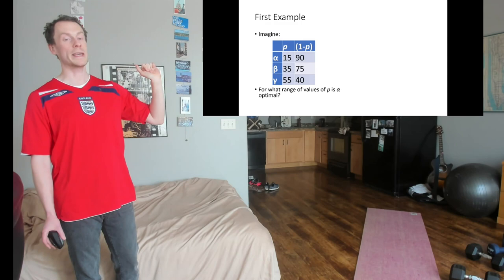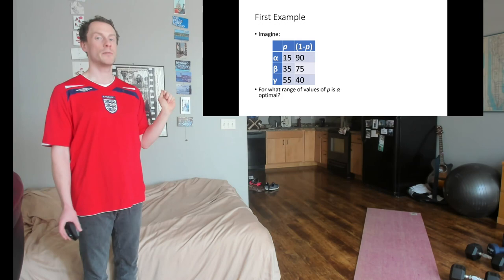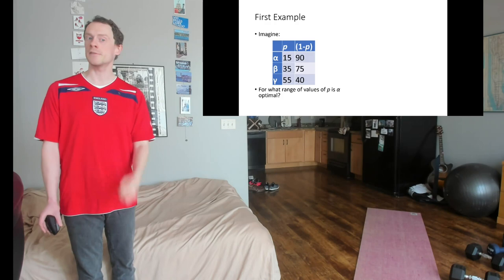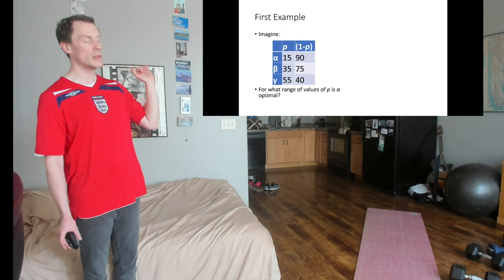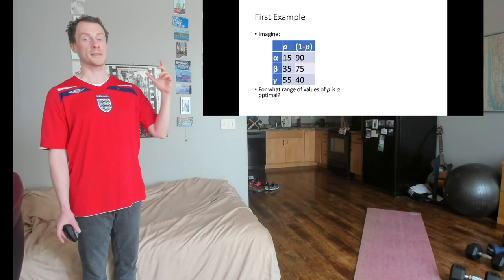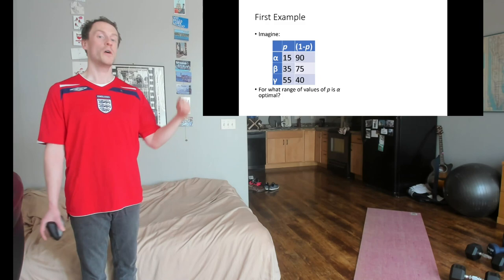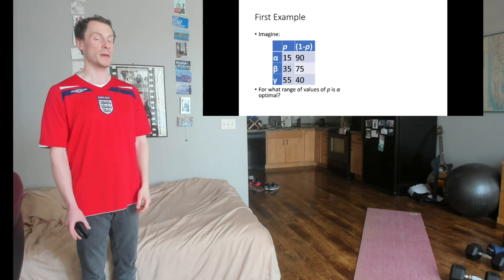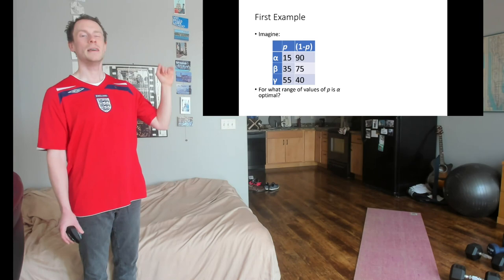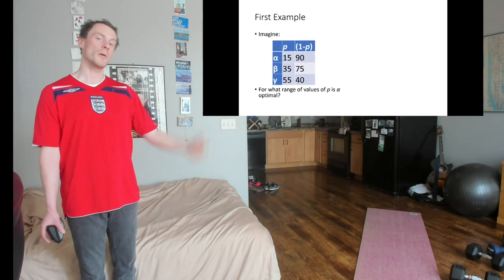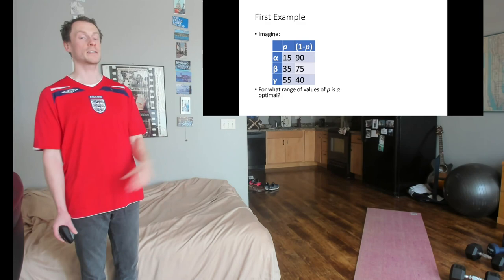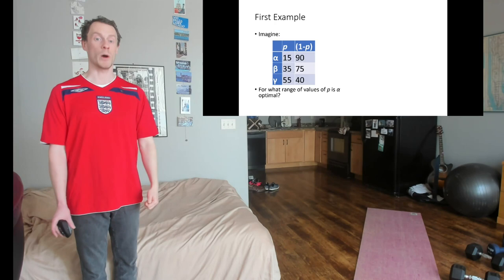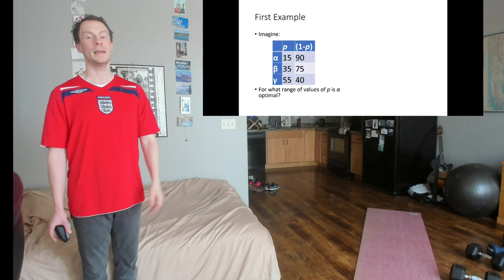And what we're asking is each of these is a risky lottery. So if we pick lottery alpha, we get a payoff of 15 with probability P and a payoff of 90 with probability 1 minus P. So whatever P is, so if this was like a coin flip, for example, P would be 50 and 1 minus P would also be 50. Lottery beta gives us 35 with probability P and 75 with probability 1 minus P and gamma gives us 55 or 40. So let's take a moment here to think about what's actually happening.